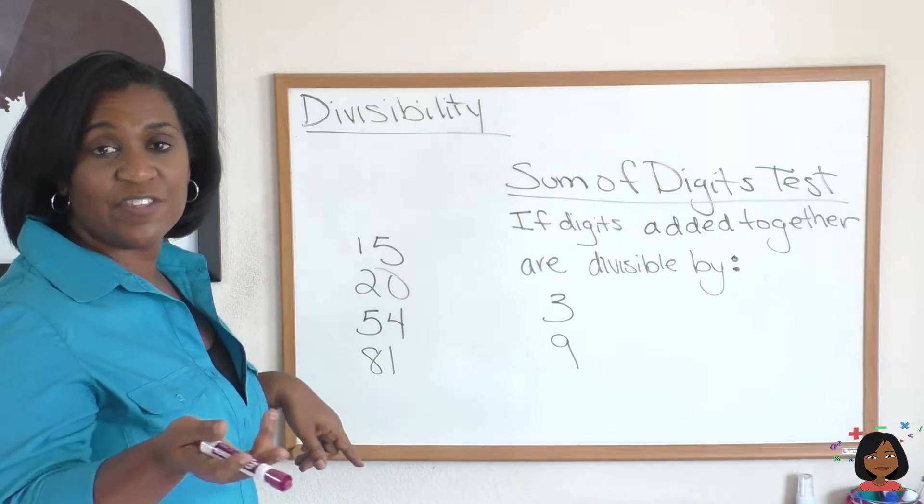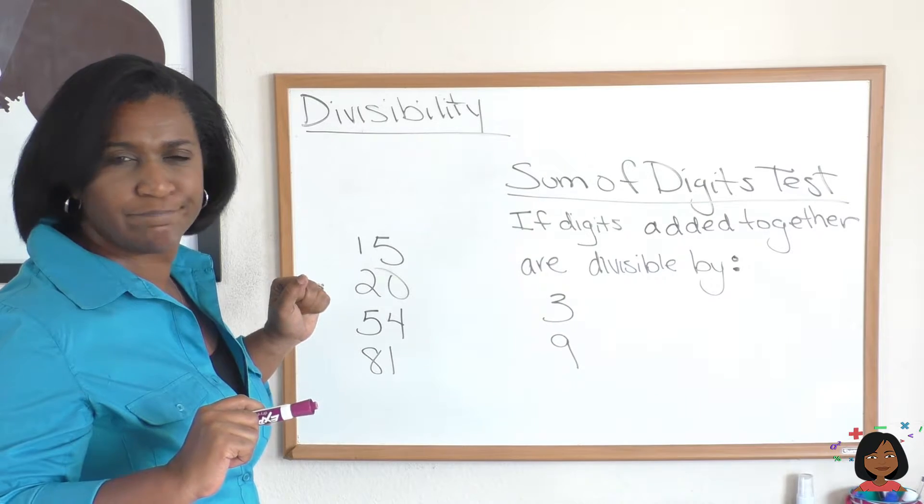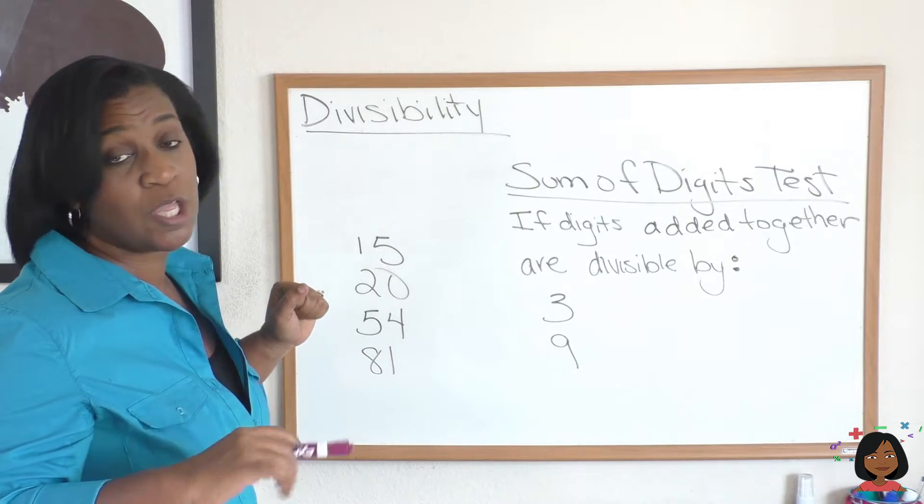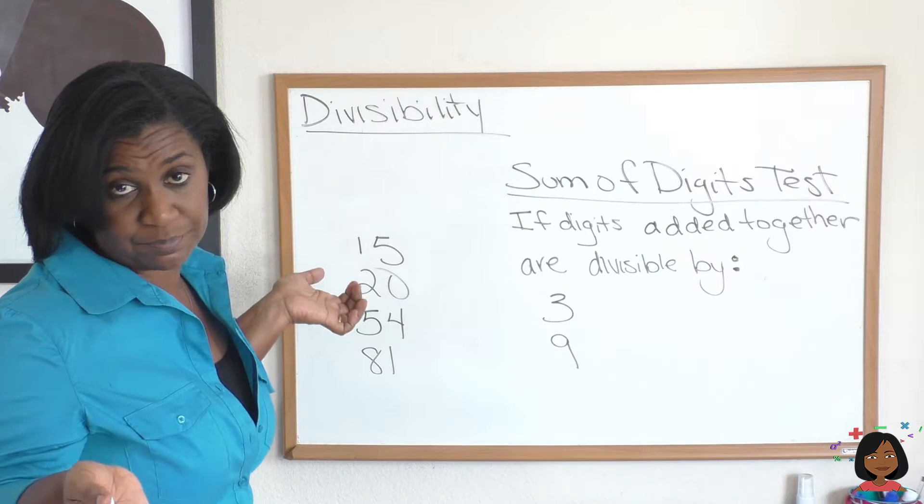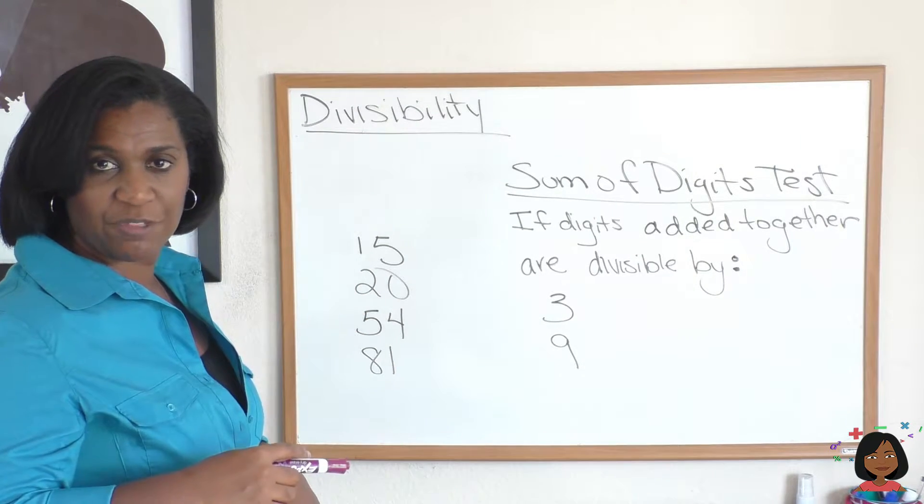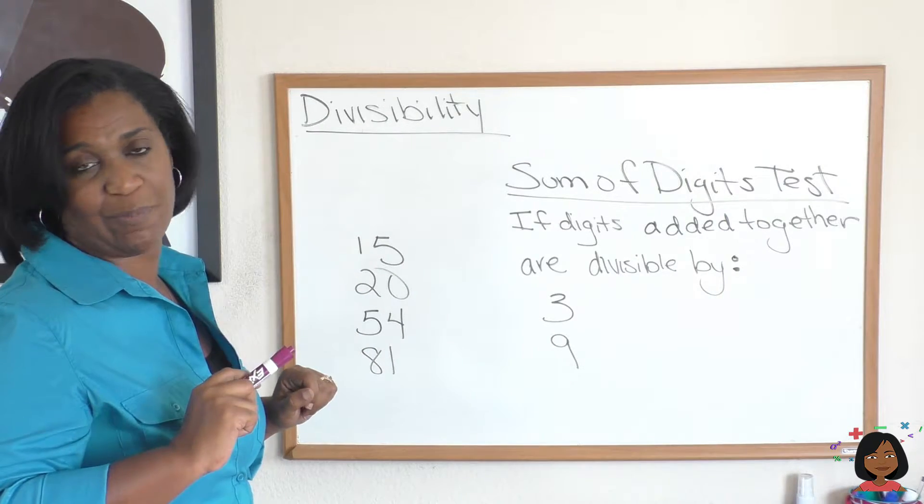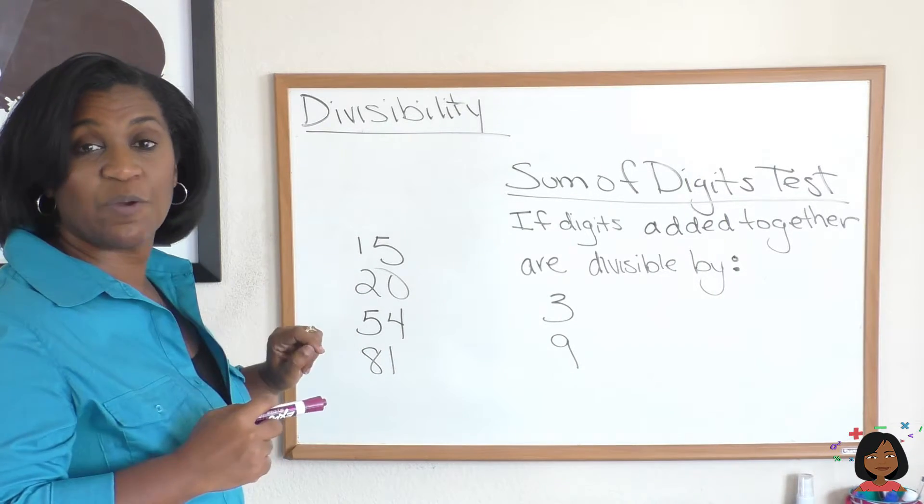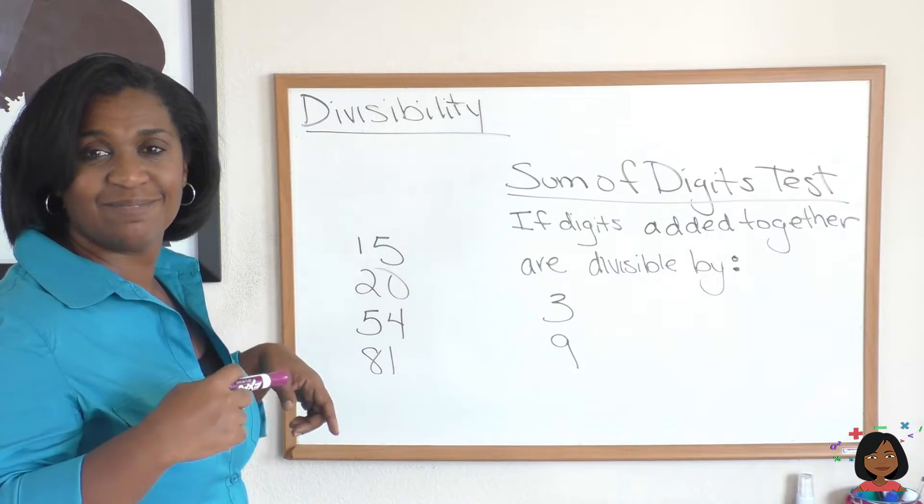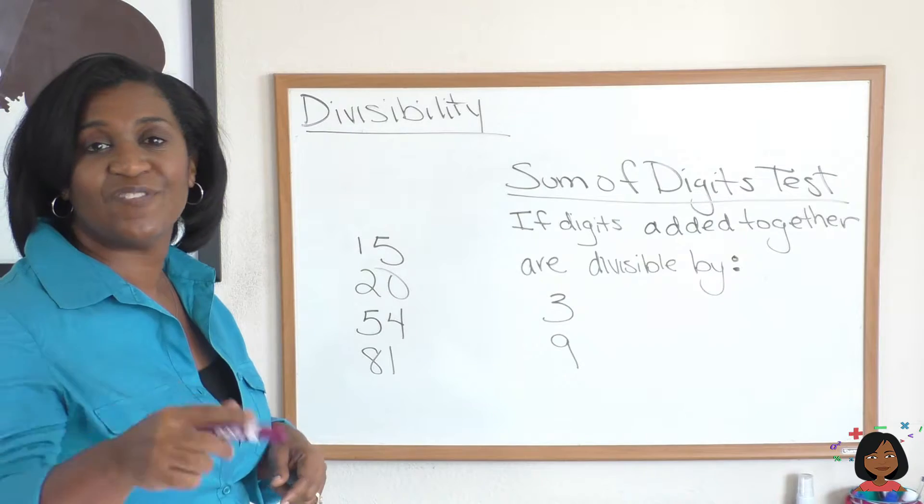Let's try a few more examples. 20. Add the digits together. 2 plus 0 is 2. Is that divisible by 3? No. 2 is not divisible by 3. So 20 is not divisible by 3. Let's keep going. 5 plus 4 is 9. Is 9 divisible by 3? Yes, it is. So 54 is also divisible by 3. Let's try 81. 8 plus 1 is 9. That's divisible by 3, so it means 81 is divisible by 3.